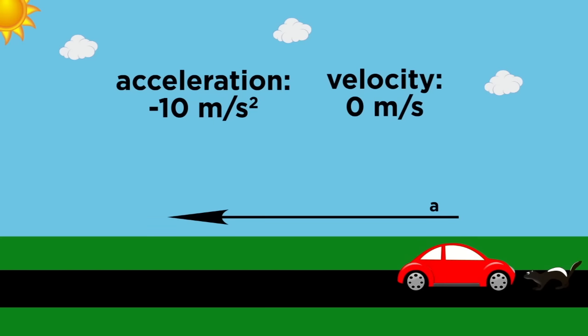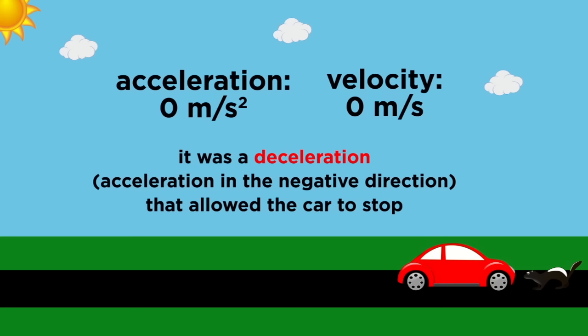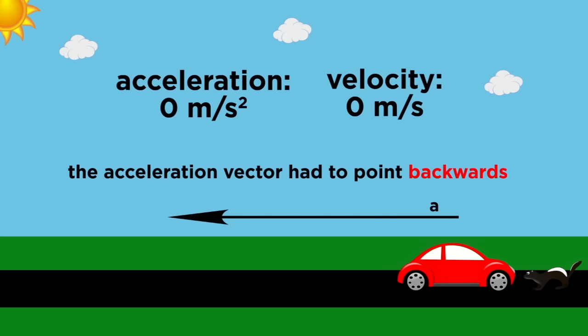Let's say you see a skunk in the middle of the road. It's your most favorite animal, so you slam on the brakes. We can describe this as a deceleration, which is an acceleration in the negative direction. Since you are going from a moderate speed to a standstill in a very short amount of time, this vector will be quite long and pointing back towards the origin.